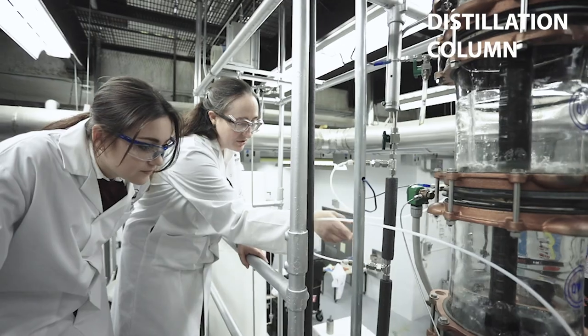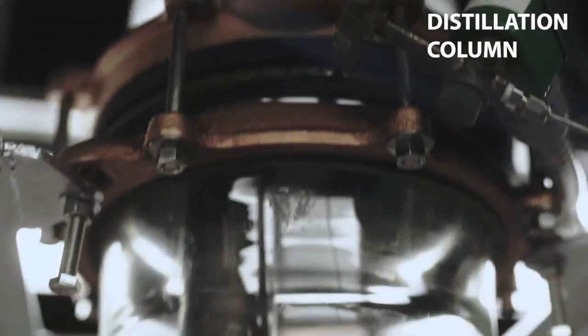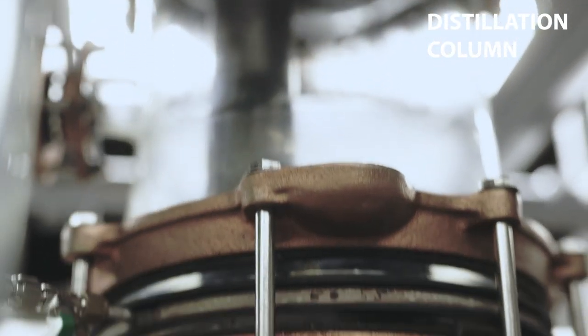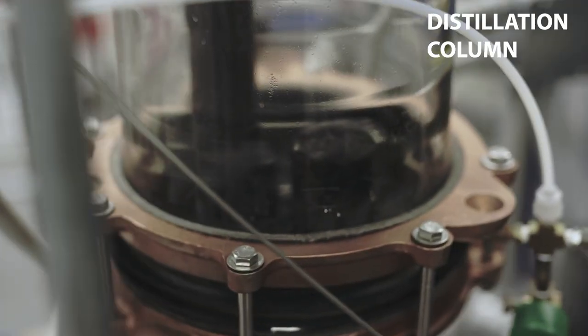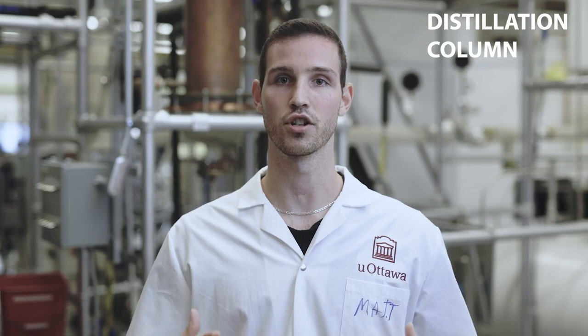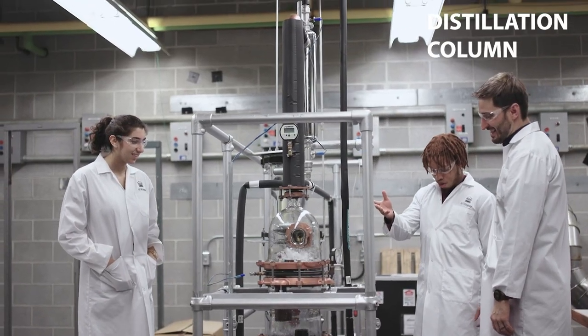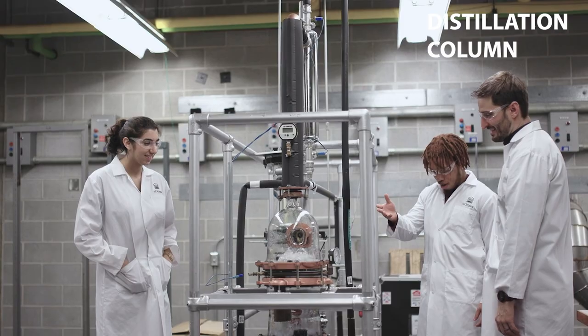Distillation columns are one of the most commonly used units within chemical engineering. They work by separating components based on their relative boiling points. One of the common industries that distillation columns are used in is the petroleum industry, where they're used to separate hydrocarbons in the production of fuels. As a student in chemical engineering, you'll start to see the theories and equations behind distillation columns as early as your second year.